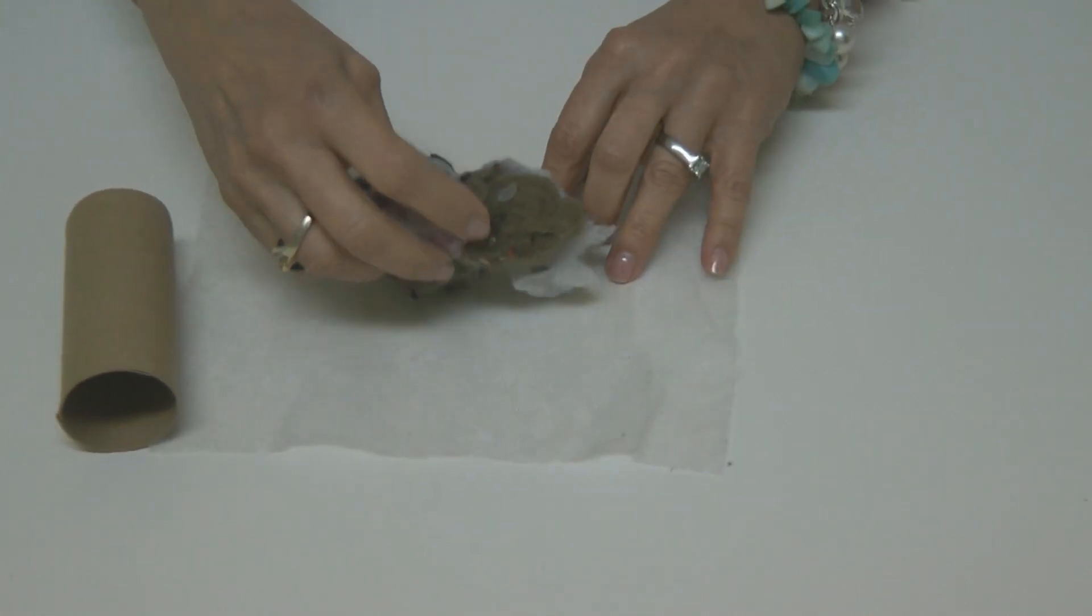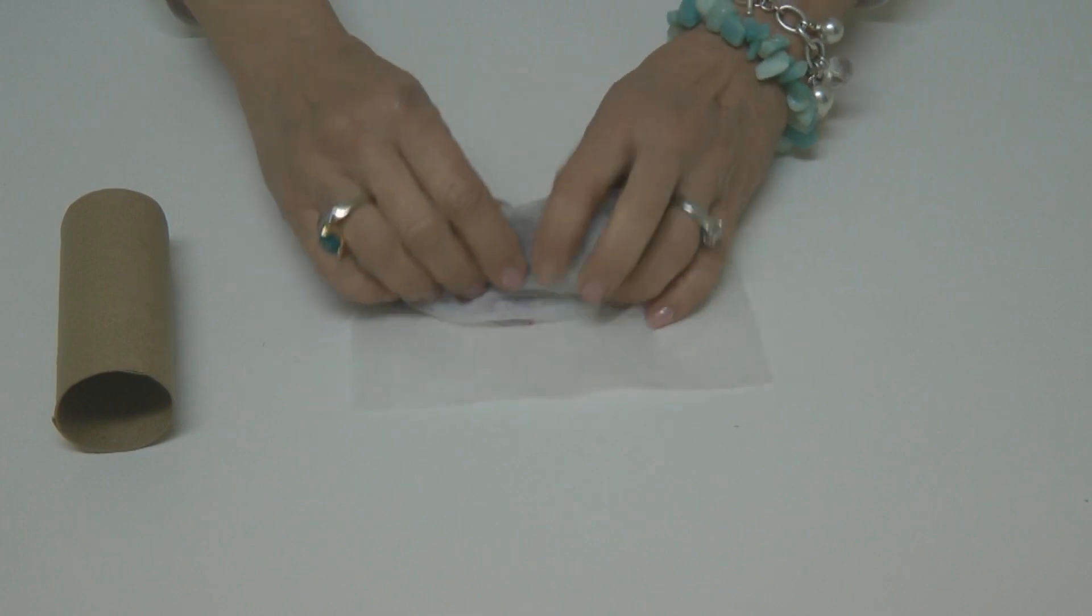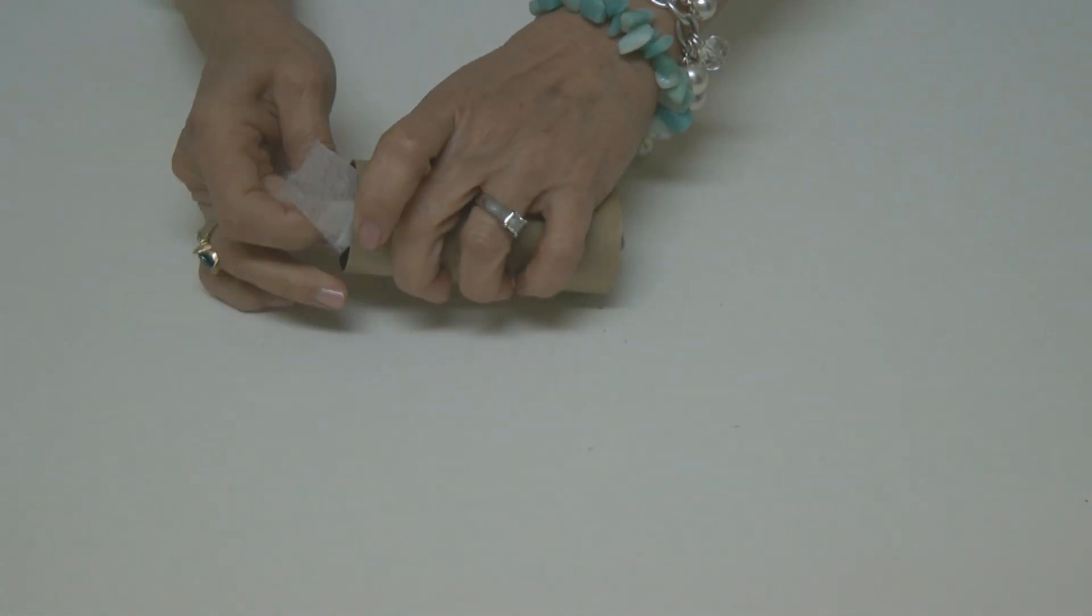Roll the dryer lint into the dryer sheet and stuff it in the empty cardboard tube. Allow a bit of the dryer sheet to poke out of the end, and your fire starter is ready to light.